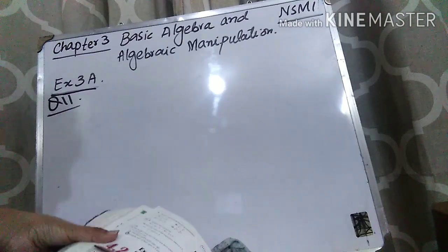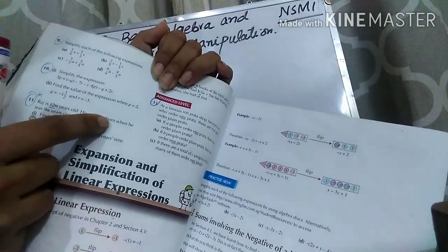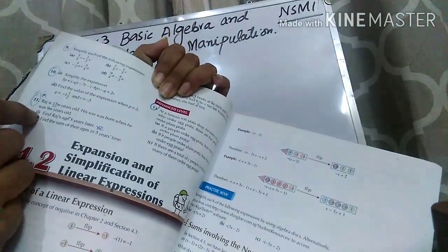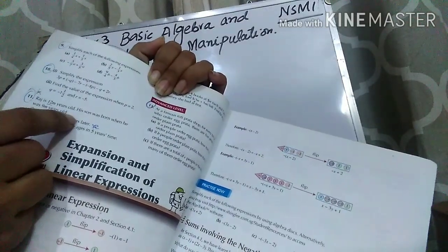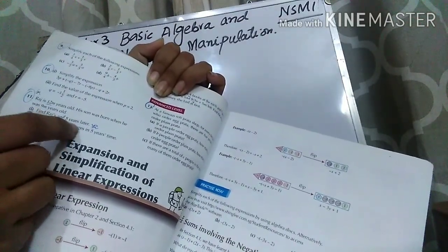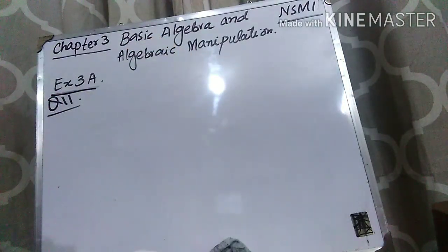Now let's come to the lecture. Question number 11 — I'm going to show you the question here. The question is: Raj is 12m years old when his son was born, when he was 9m years old. In part one, you have to find Raj's age 5 years later, and find the sum of their ages in 5 years' time.